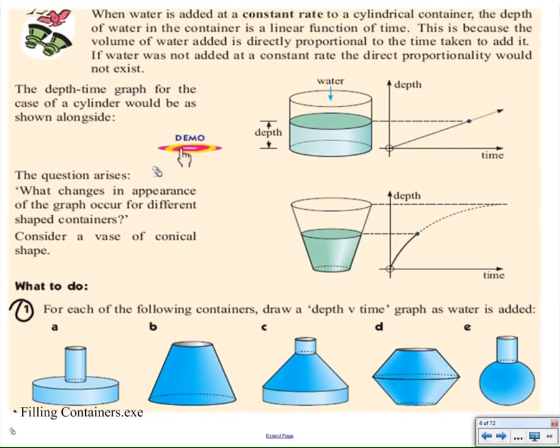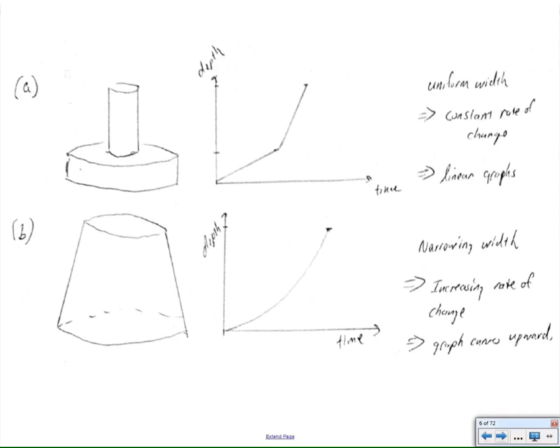So this is going to be the basis for what we're going to be studying in this chapter called the average rate of change, but we'll just look at a couple more things here. So again, what we see is if we have a uniform width, we're going to see a constant rate of change, so we're going to see linear graphs.